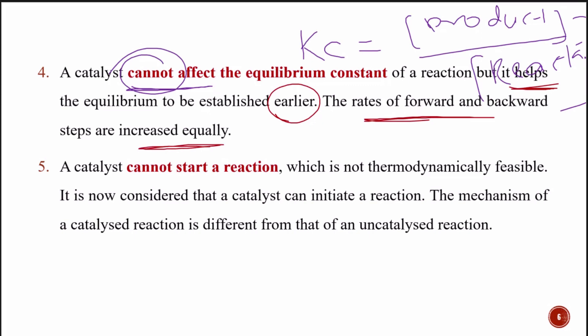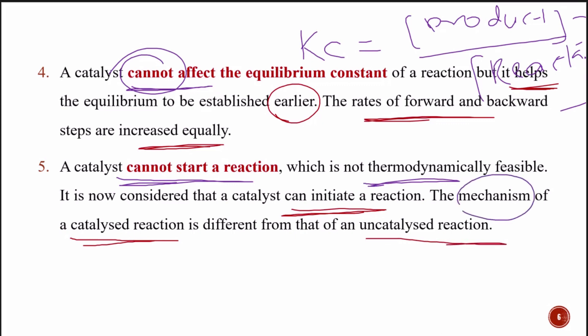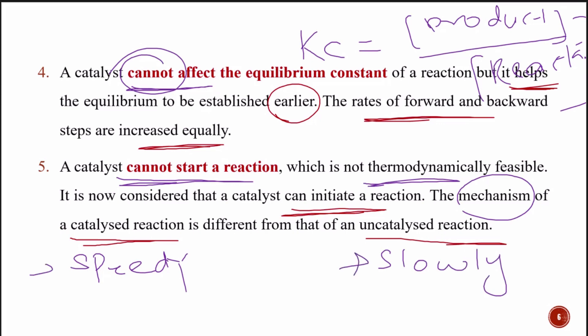Forward and backward reaction rates both increase, but the equilibrium constant is unaffected. A catalyst cannot start a reaction that is not thermodynamically feasible. However, it is now considered that a catalyst can initiate a reaction that is thermodynamically feasible. The mechanism of a catalyzed reaction is different from an uncatalyzed reaction — the catalyzed reaction is faster and has lower activation energy, whereas the uncatalyzed reaction proceeds slowly with higher activation energy.